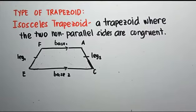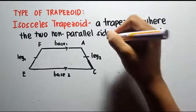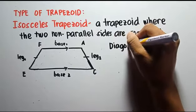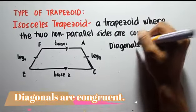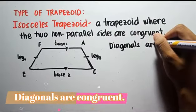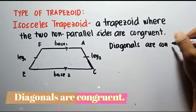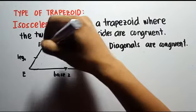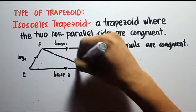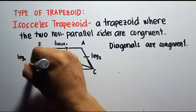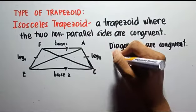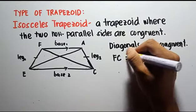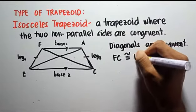In an isosceles trapezoid, the diagonals are congruent. So diagonal FC is congruent to diagonal EA.